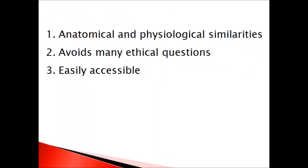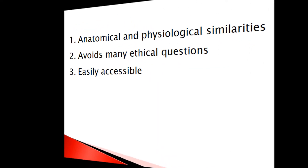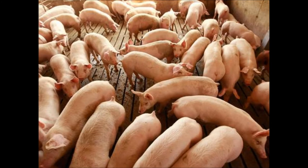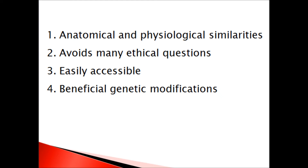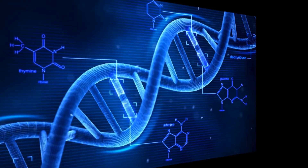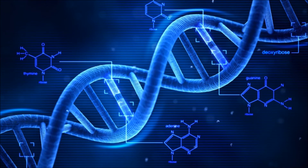Number three, porcine tissue is easily accessible. Swine are very reproductively efficient and are prolific breeders, resulting in a large pool of potential donors. Number four, beneficial genetic modification. Genetic modifications make porcine tissue less likely to be attacked by the recipient's immune response, therefore decreasing the rate of rejection.